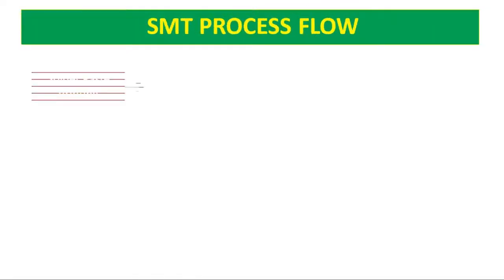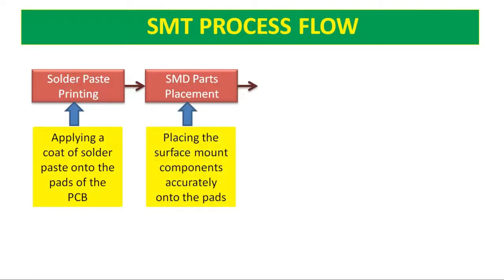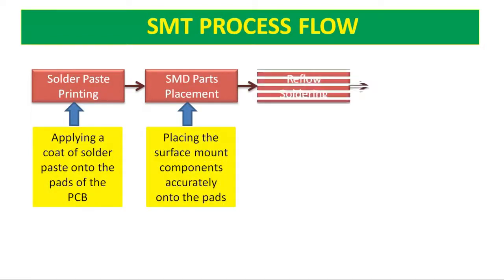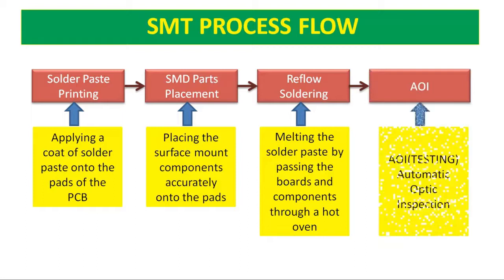Let's see the SMT Process Flow. First, Solder Paste Printing: applying a coat of solder paste onto the pads of the PCB. Next, SMD parts placement: placing the surface mount components accurately onto the pads. Then, Reflow Soldering: melting the solder paste by passing the board and components through a hot oven.